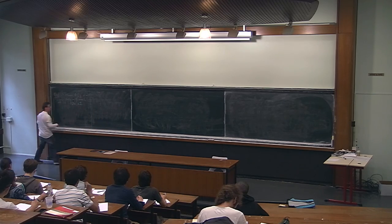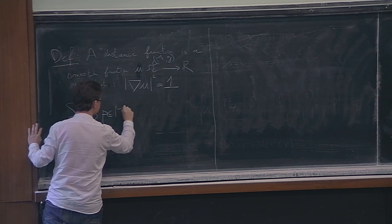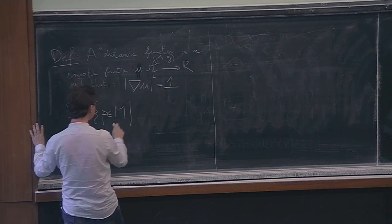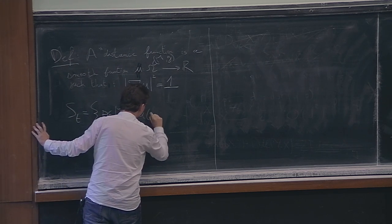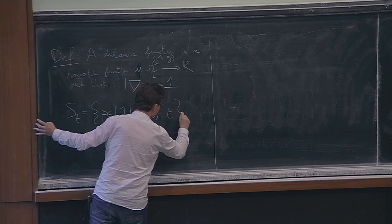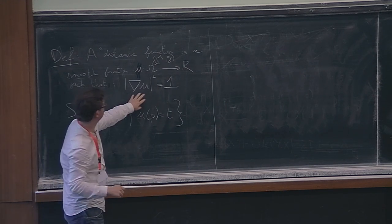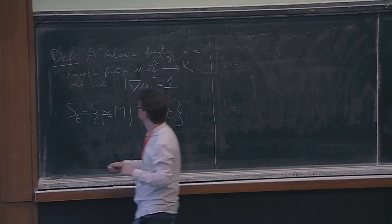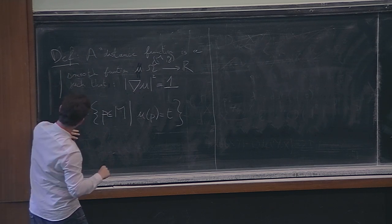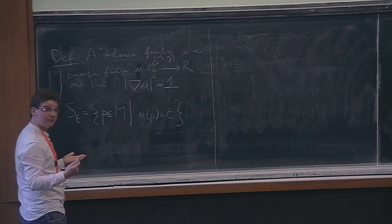These functions have really nice properties. Let S_T be the set of points in M such that U(p) = T — these are the level sets of U. Since the gradient is never zero, these are smooth hypersurfaces in the manifold, and there will be an interesting relation between the hypersurface and the function U.